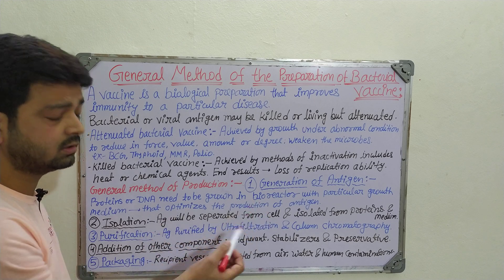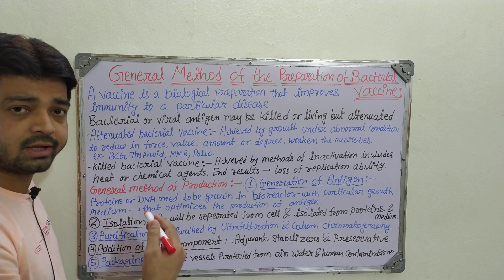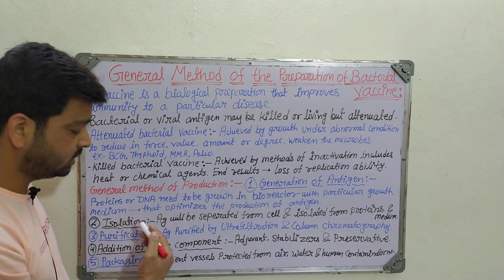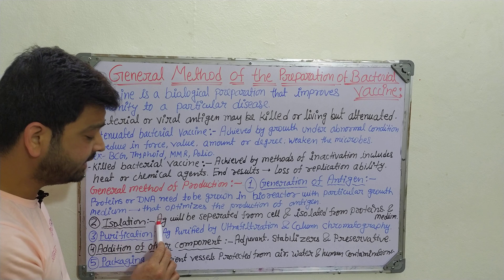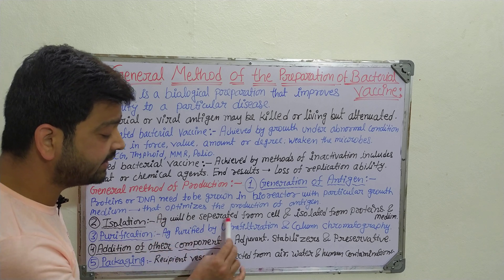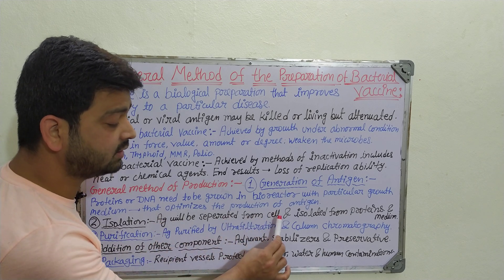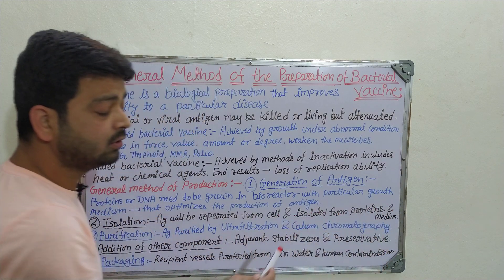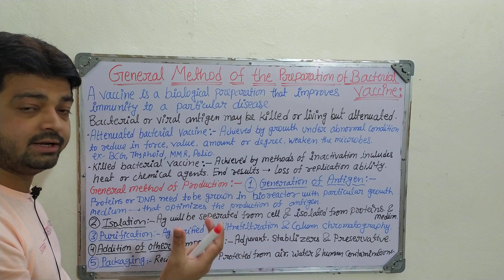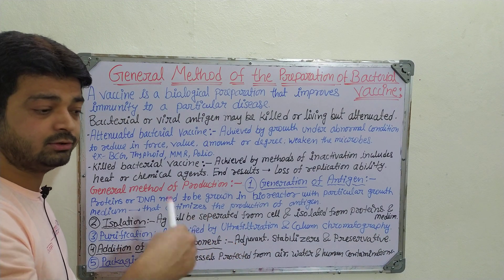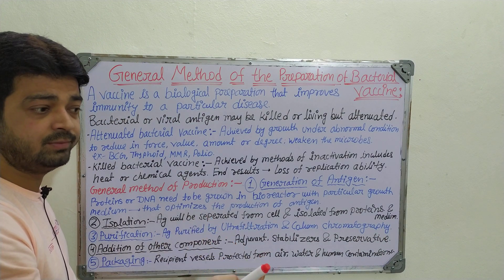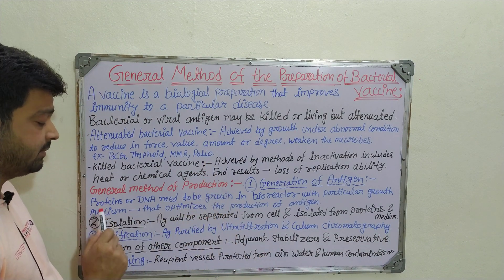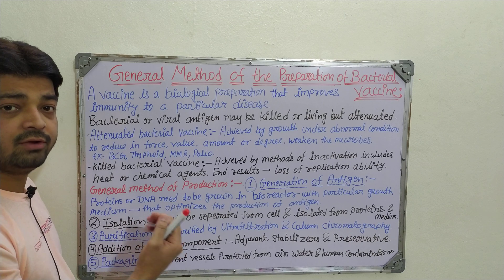The second step is isolation. Whatever cultivation has occurred in the bioreactor, we need to isolate it. The antigen is separated from cells and isolated from the proteins and medium present in the bioreactor.